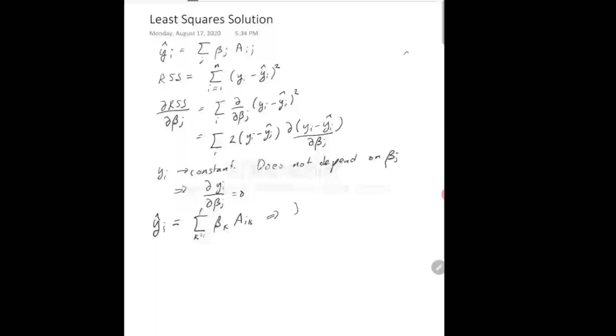So that means here that the derivative of y hat i by beta j is just aij. Because it's a term corresponding to the term with k equal to j.